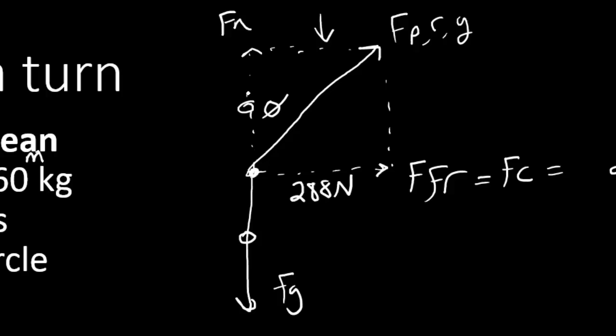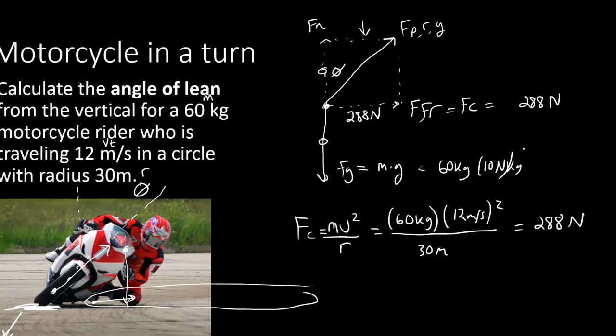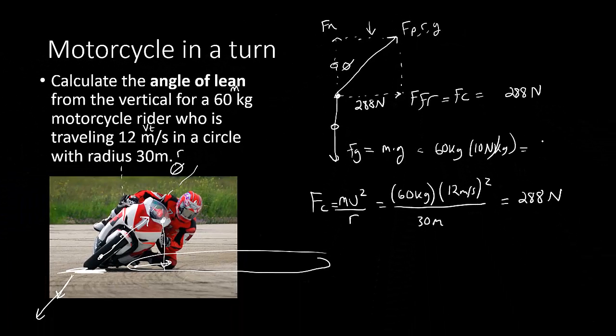So we need this other angle here, the normal force. To find the normal force, because it's balanced with the force of gravity, I'm going to take the mass times the gravitational field strength, which is just my 60 kilograms times my 10 newtons per kilogram. And we get the force of gravity on my rider is 600 newtons.